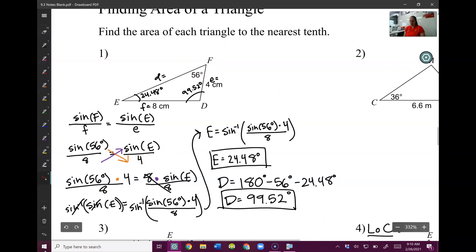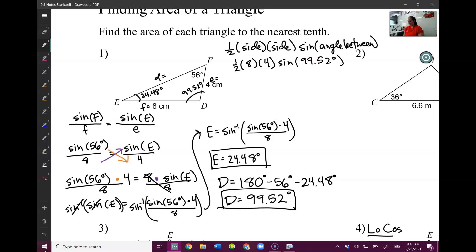Now I'm going to use my area formula. One-half times side times side times sine of the angle between. I've got one-half times 8 times 4 times sine of my angle between. Type that all in, and you should get 16.73. And there you go.